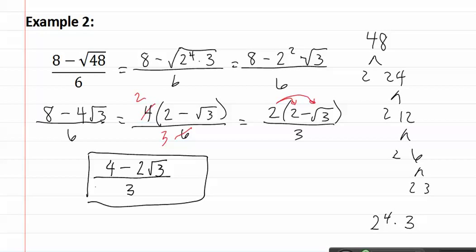Remember, when you have problems that have a radical and a fraction, you must first start by simplifying the radical. Then, if there is more than one term, you must factor out whatever is in common before reducing.